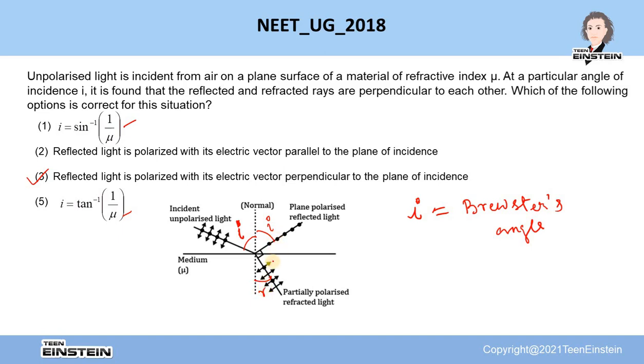According to the given condition, this I plus R will be 90 degrees. Therefore, angle of refraction will be 90 degrees minus I.